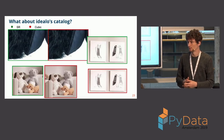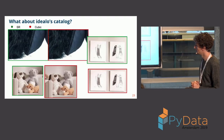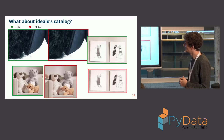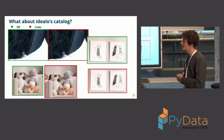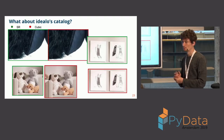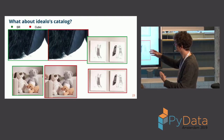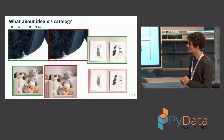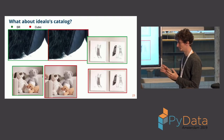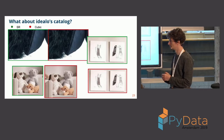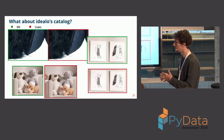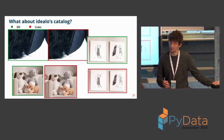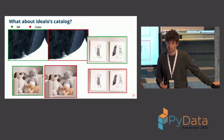We tried applying this to Idealo's product catalog. In the red boxes you have the bicubic scaling baseline, in the green boxes the super-resolved counterpart. Details are sharper, but the issue is those images are not great — they have JPEG artifacts, and those artifacts also get sharpened, which is not desirable. Although it works well on good images, it doesn't do great when the input has compression artifacts.